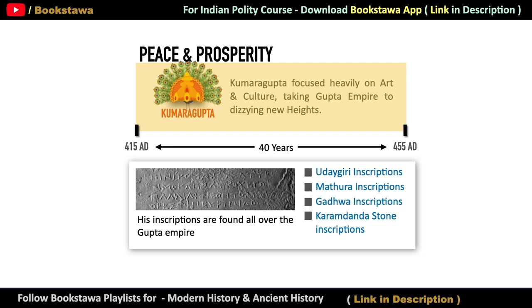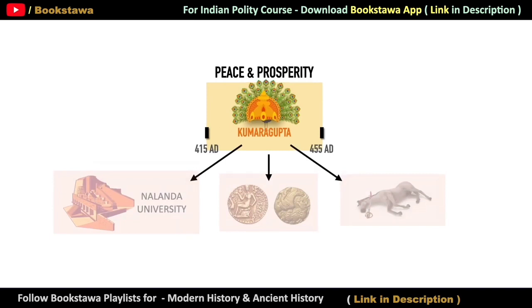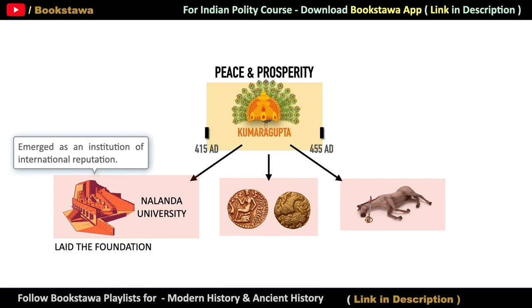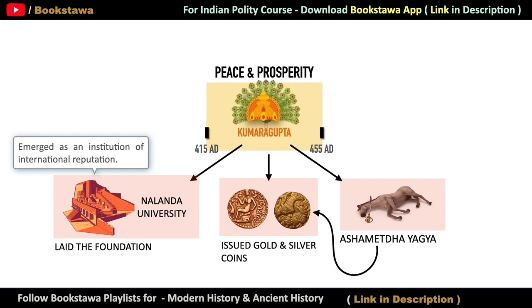Now let's talk about the most important contributions of Kumar Gupta. He did three main things during his rule. Firstly, he laid the foundation of Nalanda University, which emerged as an educational institution whose reputation spread not only in India but also in other countries. Apart from this, he issued many gold coins as well as silver coins. And like the rest of the Gupta rulers, he also performed Ashvamedha Yagya, and on one coin he also depicted the motif of the horse of the Ashvamedha Yagya.